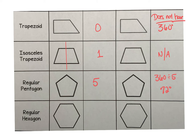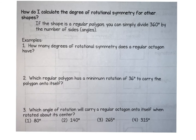A regular hexagon has six lines of symmetry. The rotational order is also six, giving a magnitude of 60 degrees (360 ÷ 6). For a regular polygon, simply divide 360 by the number of sides or vertices. For a regular octagon (8 sides): 360 ÷ 8 = 45 degrees.